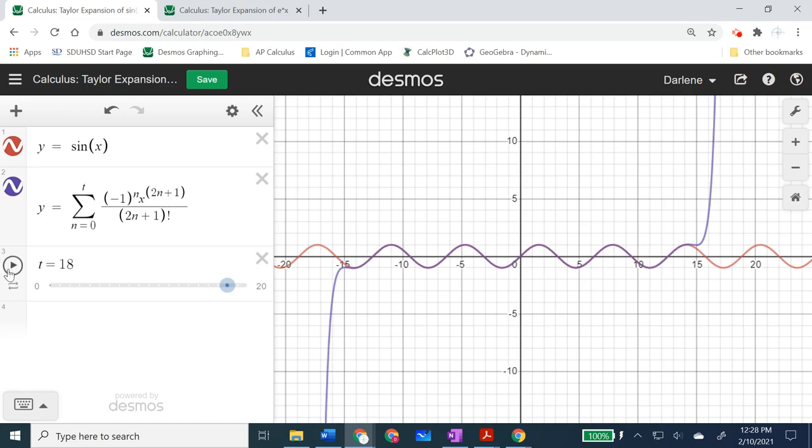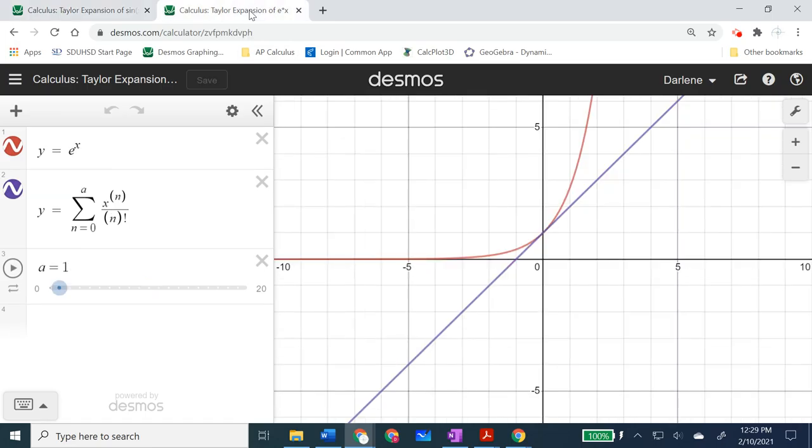I'll push play again. If I could get an infinite, think about what that means though, an infinite degree polynomial. But if there was such a thing, then I could create the entire sine function off of an infinite degree polynomial. Now, I've got another one for you.